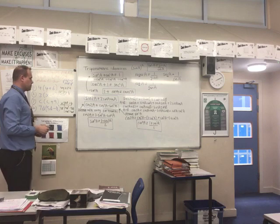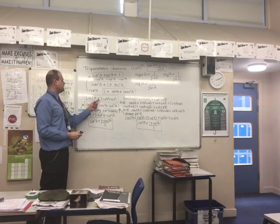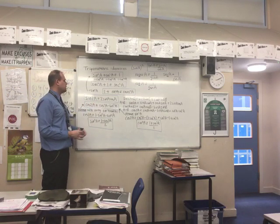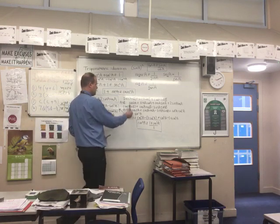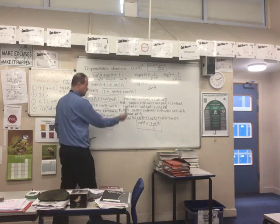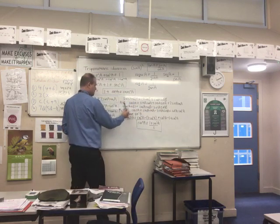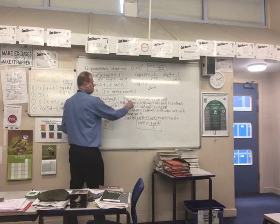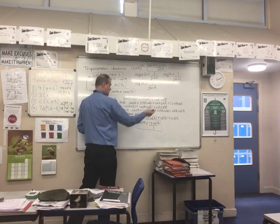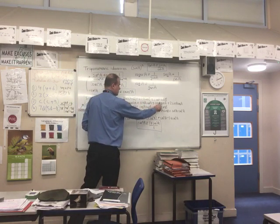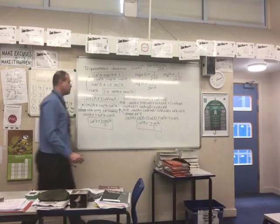Another important identity is the double angle formula. Sin2A = 2sinAcosA. You can generate this from the addition formula: sin(A+B) = sinAcosB + cosAsinB. If you let A equal B throughout, the left side becomes sin2A, and the right side becomes sinAcosA + cosAsinA = 2sinAcosA.